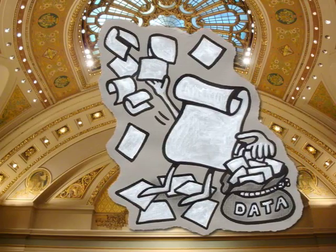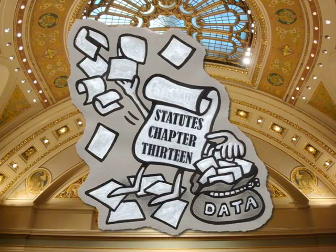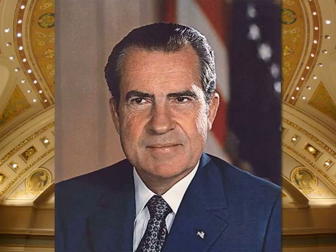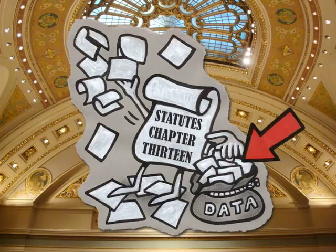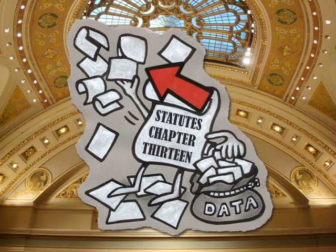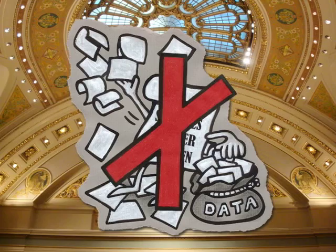In 1974, Minnesota passed the Minnesota Government Data Practices Act. It was created largely in reaction to Watergate, and the basic tenant is that every piece of information generated at taxpayer expense is open to the public — except for the stuff that's not.